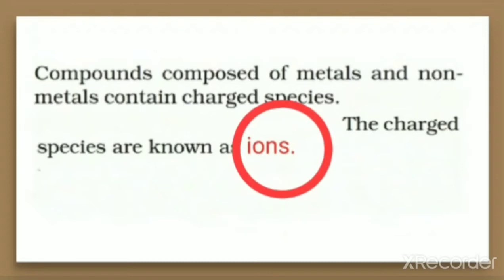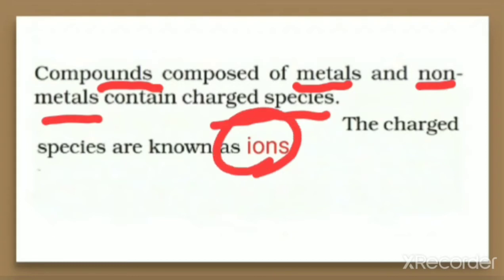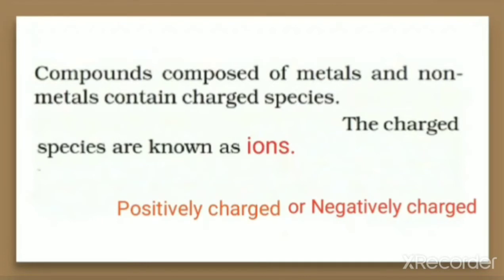So what is an ion? Atoms are electrically neutral, but when a charge is developed on an atom, it is called an ion. Compounds composed of metals and non-metals contain charged species — these charged species are called ions. Ions are the charged species. As we discussed with sodium ion and chloride ion, an ion can be either positively charged or negatively charged.